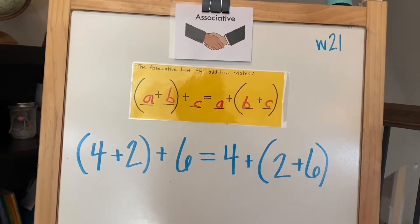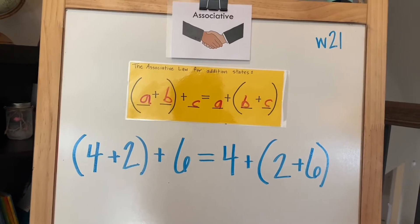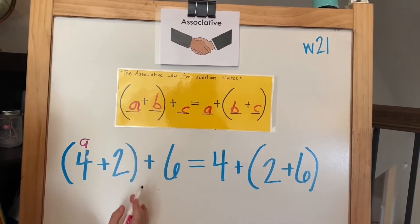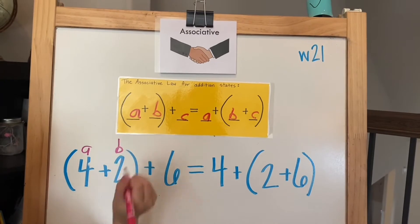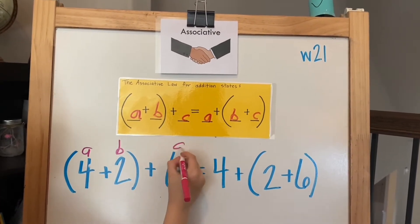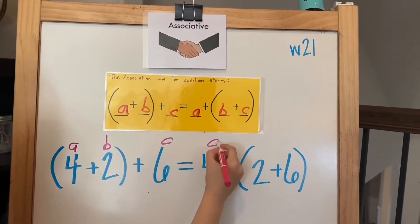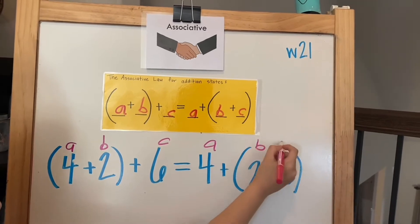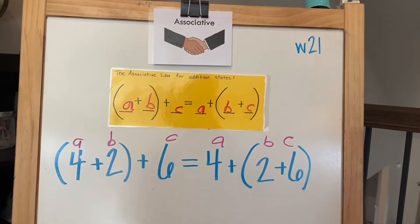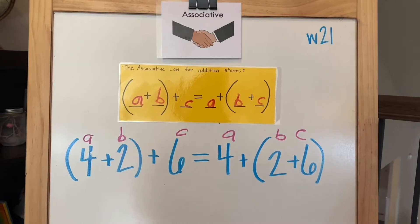Hazel, can you show everybody what does 4 represent? That's right. What does the 2 represent? B. What about 6? C. What about the other side? So A equals 4, B equals 2, C equals 6.